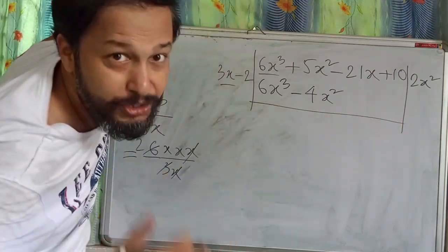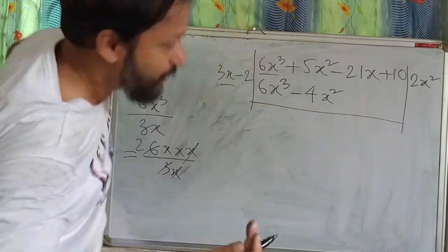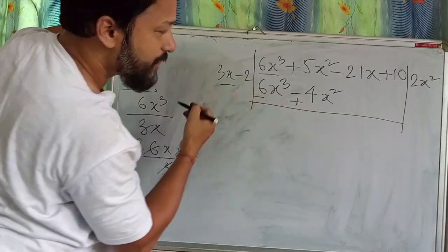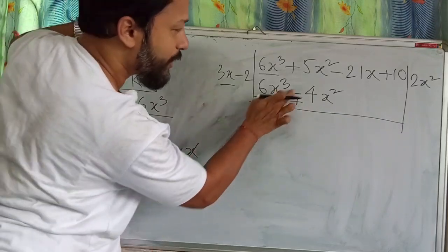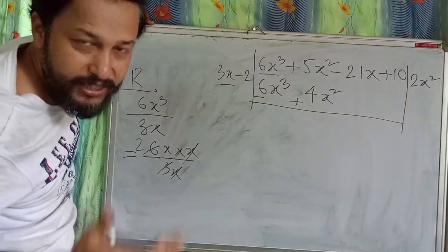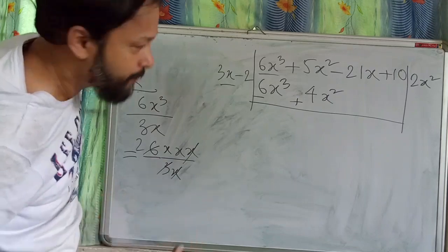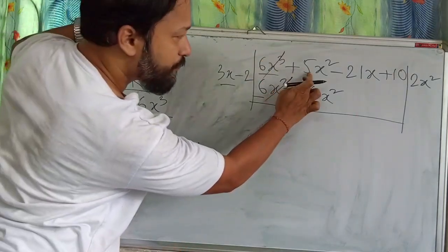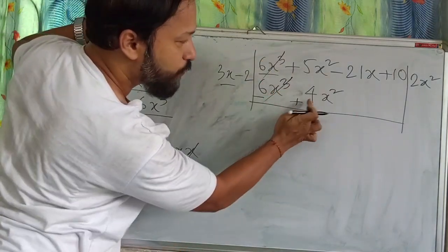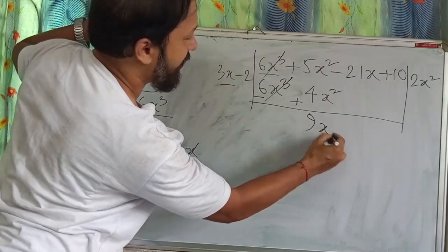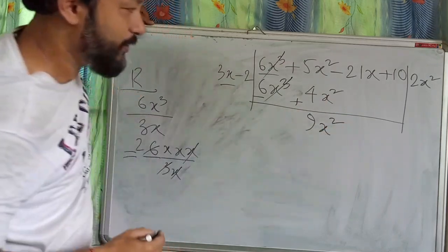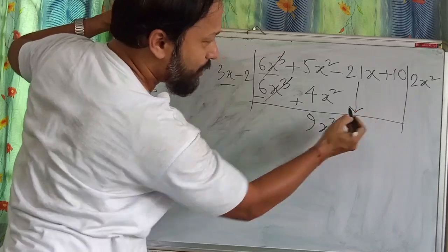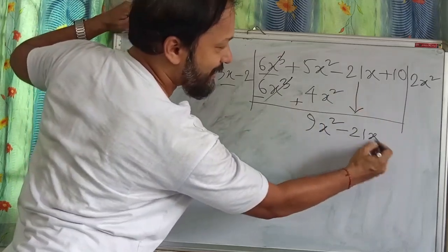Change the sign: plus becomes minus, minus becomes plus. Plus 6x³ minus 6x³ cancels. Then plus 5x² plus 4x² gives plus 9x². The term minus 21x comes down.